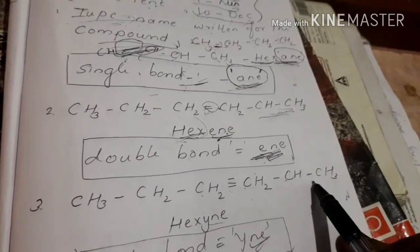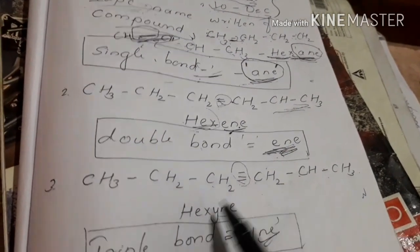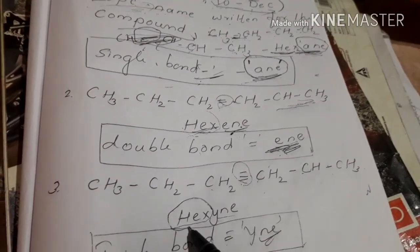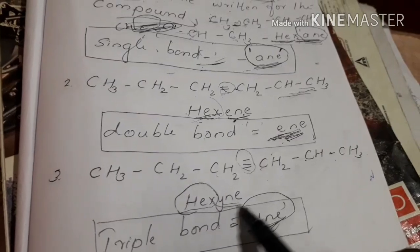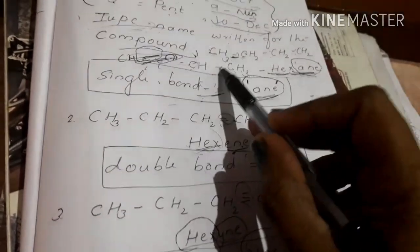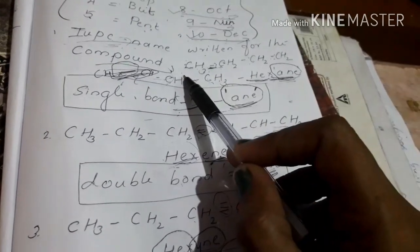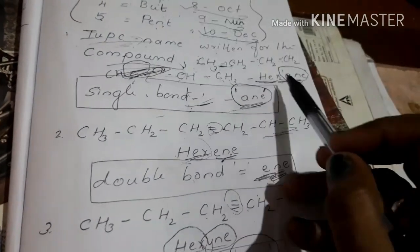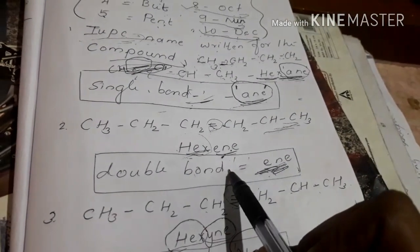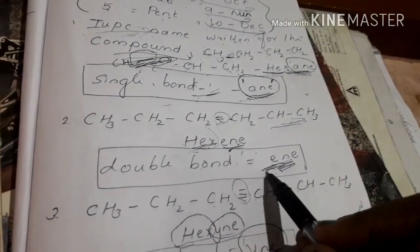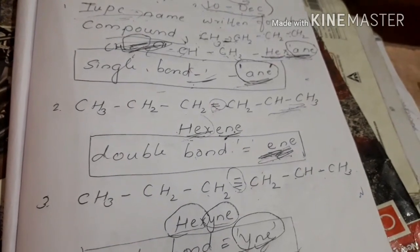For 4, 5, 6 carbons with a double bond, we use 'ene'. In this case, we call single bond 'ane' and double bond 'ene'. Triple bond is 'yne'.